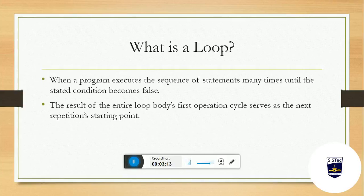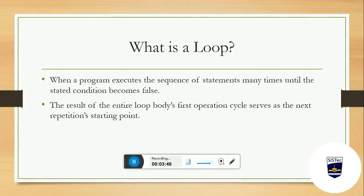The result of the entire loop body's first operation cycle serves as the next repetition's starting point. इसे हम ऐसे समझ सकते हैं कि sunlight से heat up होकर, water evaporate होकर cloud बना, और फिर rain हुई — जो rain water था, वो वापिस हमारे sea water या lake water में add up हो गया। That means जो हमारा output आया — rain water — वो वापिस sea water या lake water में add up होकर next cycle के लिए starting point बन गया। So the result of the entire loop body's first operation cycle serves as the next repetition's starting point.